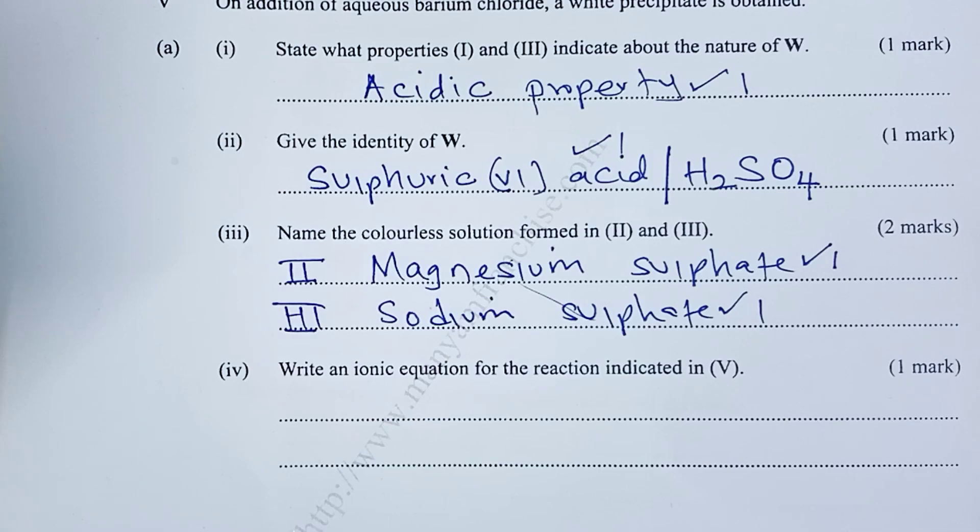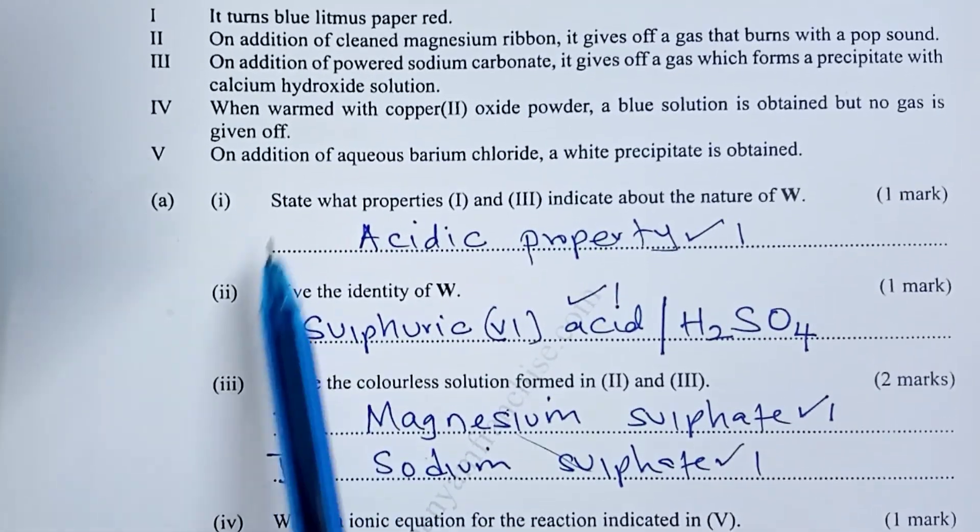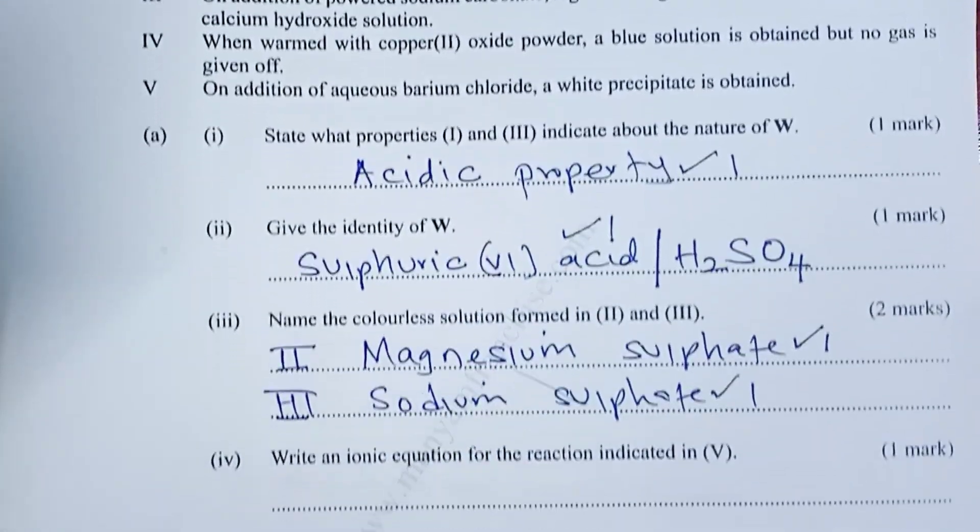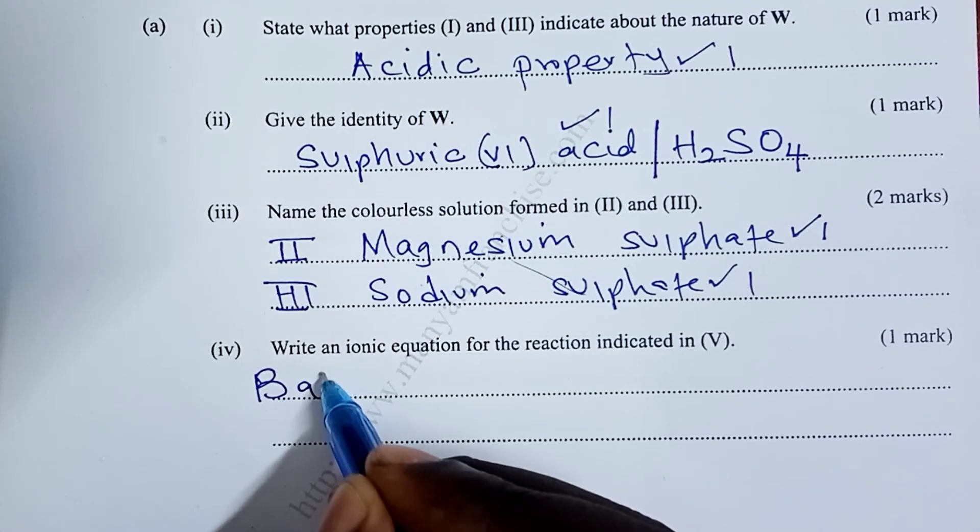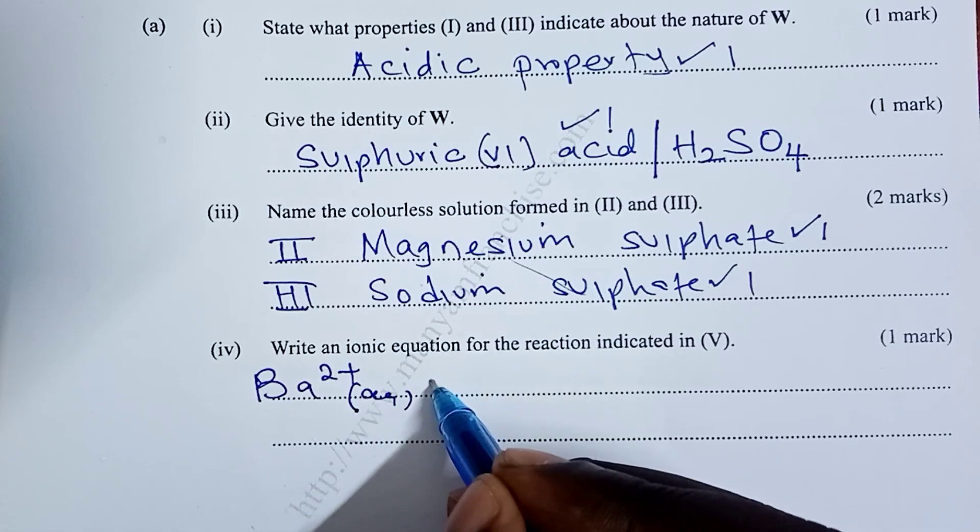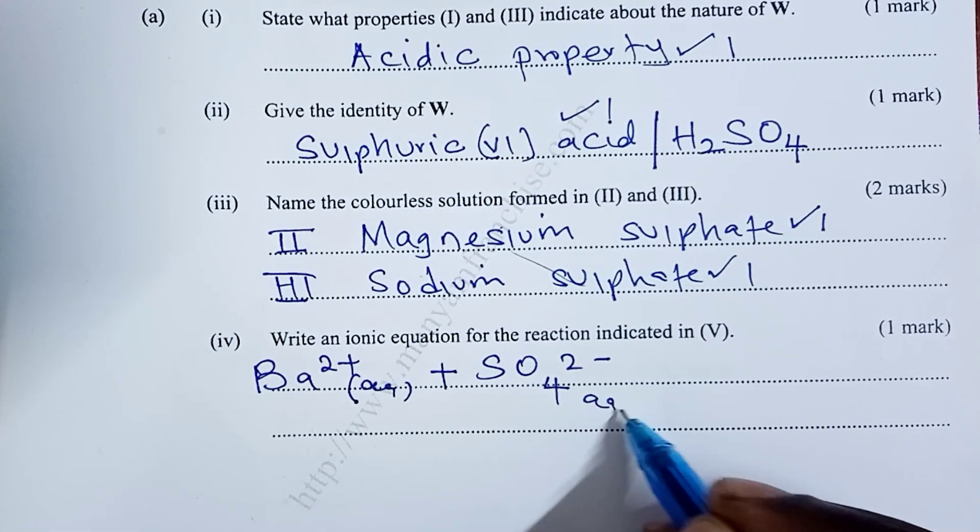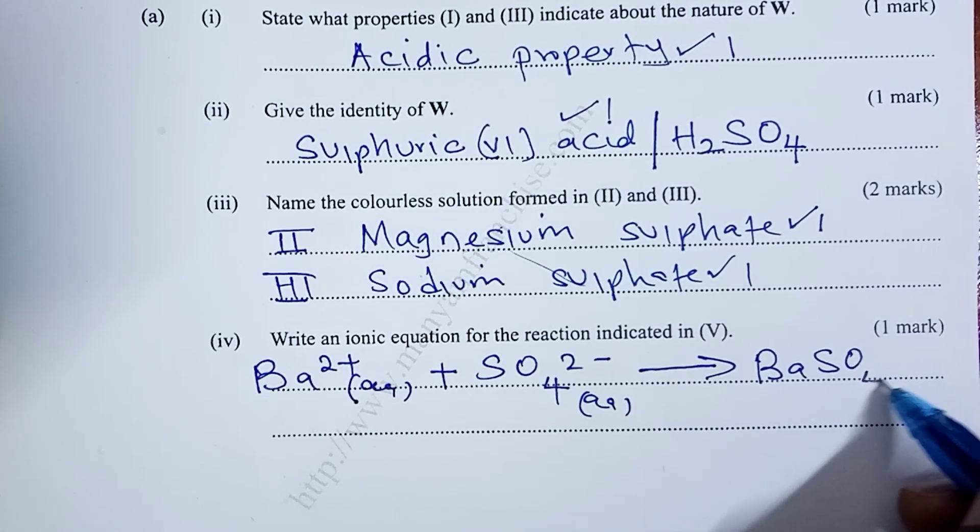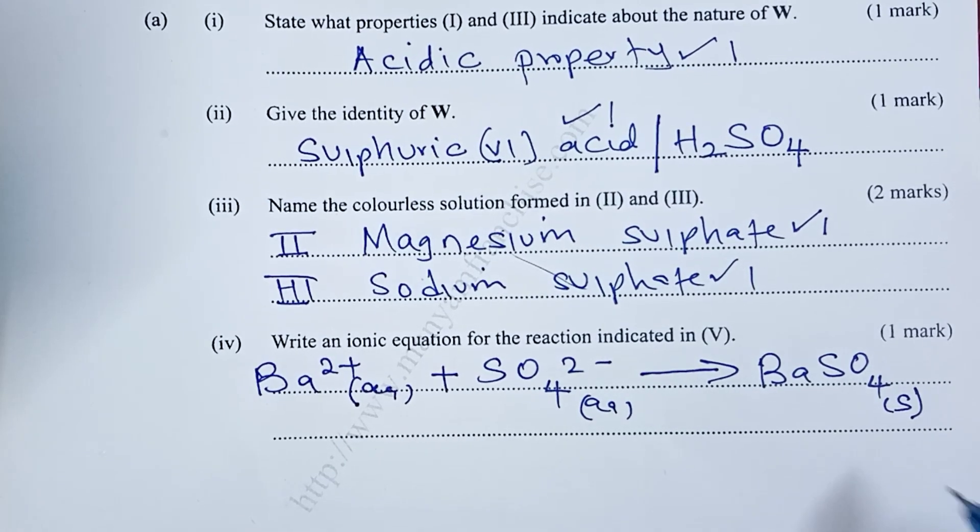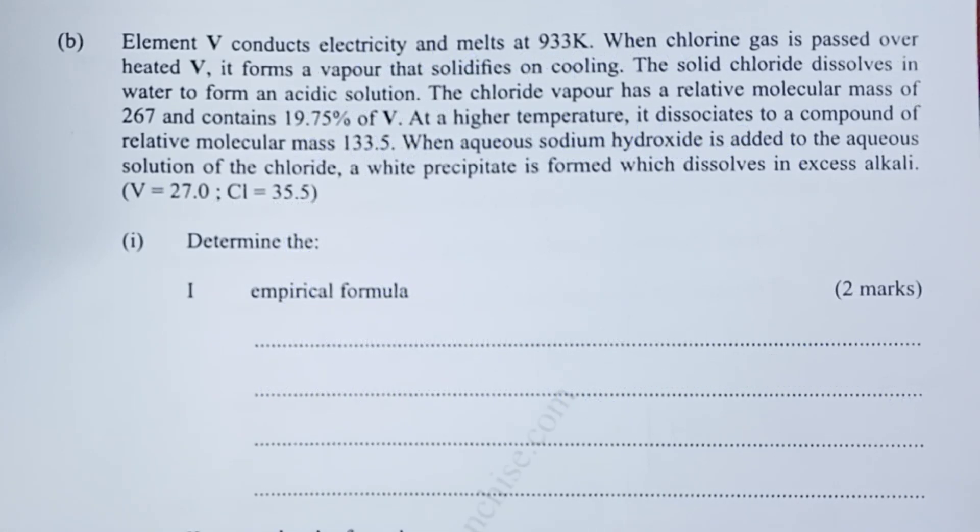Roman 4 of part A is asking us to write an ionic equation for the reaction indicated in 5. In 5 we are adding barium chloride. So here the white precipitate being formed is actually barium sulfate. So barium ions in aqueous form from barium chloride will react with the sulfate ions from our substance W, which we have identified as sulfuric acid, and you are able to get the barium sulfate as a solid which then forms as a white precipitate. So this is one mark. But if you don't indicate the states, we will deny you half a mark for that answer.